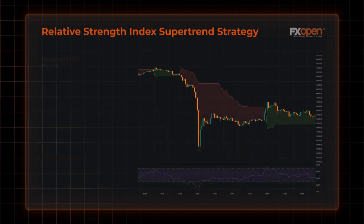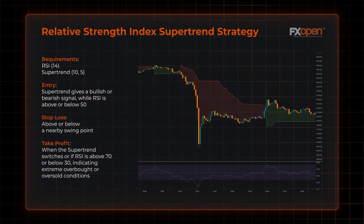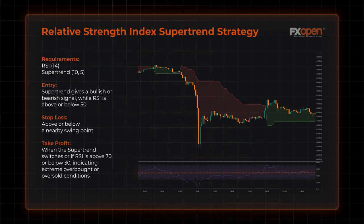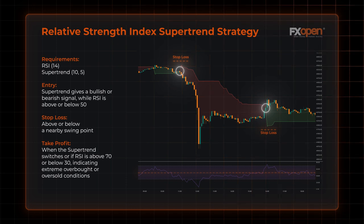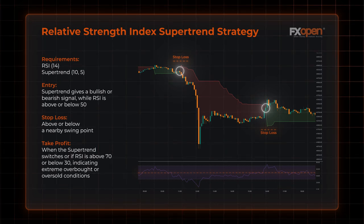Relative Strength Index Supertrend strategy. The RSI can help us confirm trends. The midpoint, 50, is regarded as the defining boundary, with action above indicating bullishness and below demonstrating bearishness. Here, you can also increase the Supertrend multiplier to 5 to get a clearer picture of the trend. Traders may enter with a market order when the Supertrend gives a bullish or bearish signal, confirmed by the RSI being above or below 50. Stop-loss may be above or below a nearby swing point. You may close the trade when the Supertrend switches, or if RSI is above 70 or below 30, indicating extreme overbought or oversold conditions.